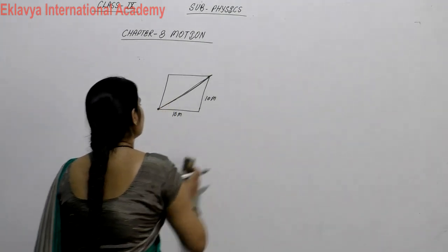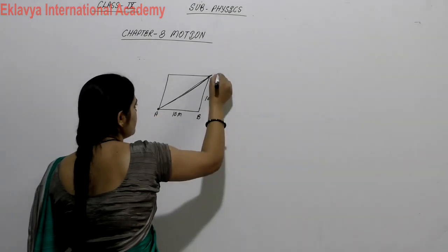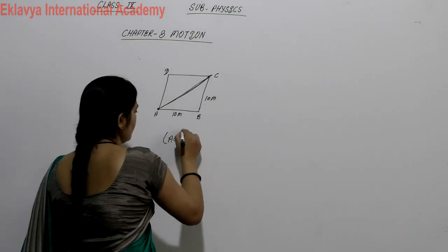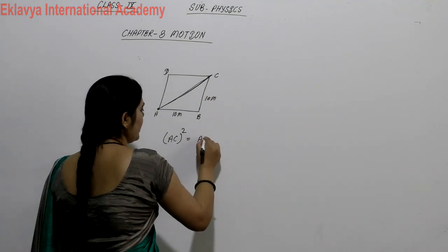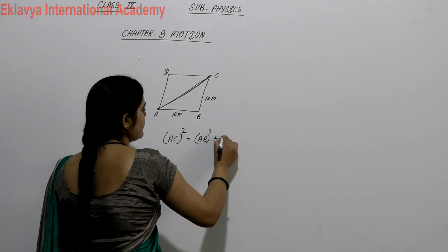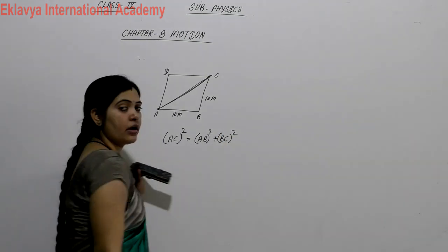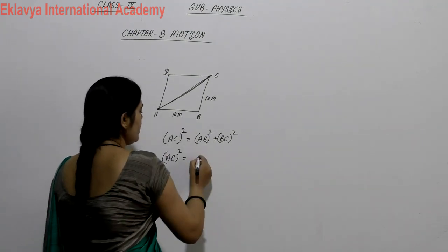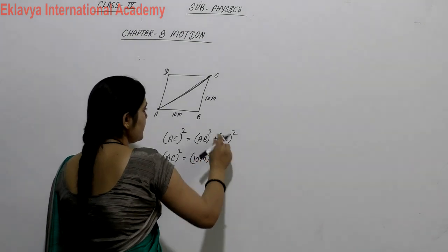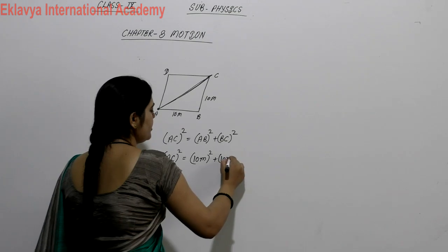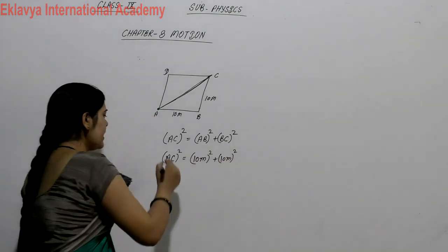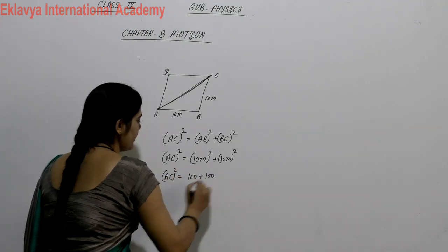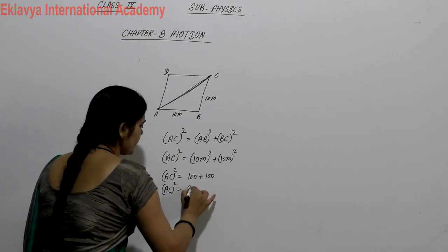Let's label the points A, B, and C. According to the Pythagoras theorem: AC² = AB² + BC². AB is 10 meters and BC is 10 meters. So AC² = 10² + 10² = 100 + 100 = 200.